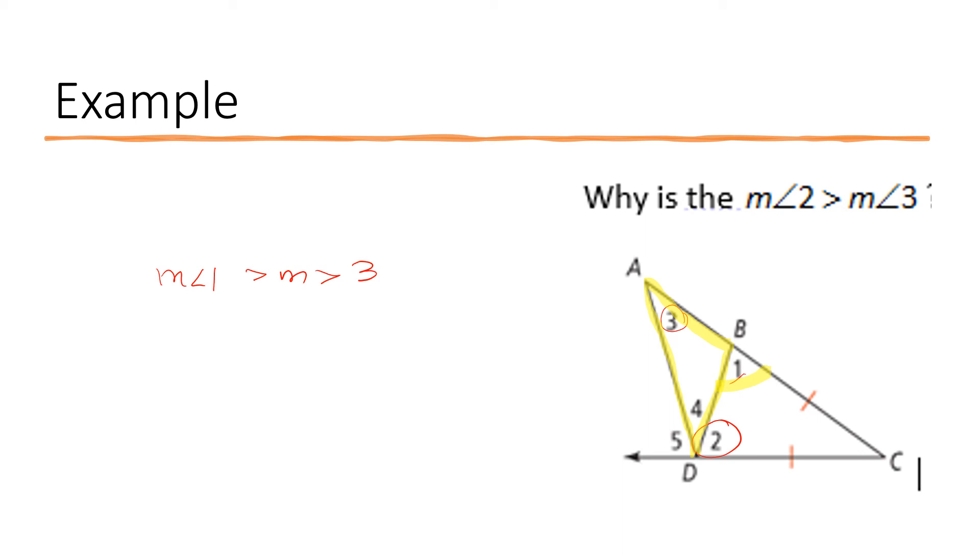Here, remember that these markings mean that those sides are congruent. And I told you that one of the corollaries or one of the implications from the first theorem that we did is that if these sides are congruent, the sides opposite them are also going to be congruent. So that means that the measure of angle one is congruent to the measure of angle two.